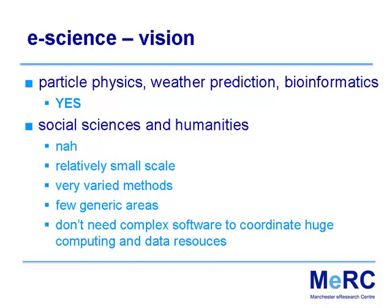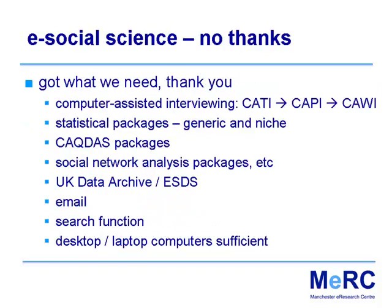So we have this vision. Particle physics? Yes please. Weather prediction? Yes please. Earthquake modelling? Yes please. Bioinformatics — all that work on genetics and new drugs? Yes please. Social sciences and humanities? Not so much. They're relatively small scale — even our big scale is a flea-bite compared with the Large Hadron Collider. Very, very varied methods. Very few generic areas. You don't need complex software to coordinate huge computing and data resources. You don't need the grid as it was being advertised. So, e-science for social science? No thanks, we've got what we need. Computer-assisted interviewing had already matured — from CATI through to computer-assisted web interviewing, where you deliver directly through a normal browser.